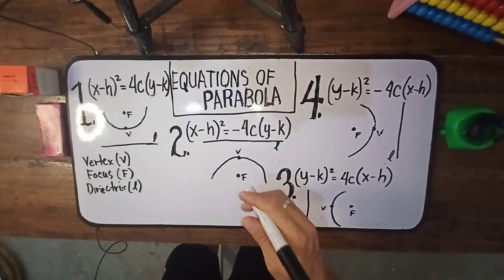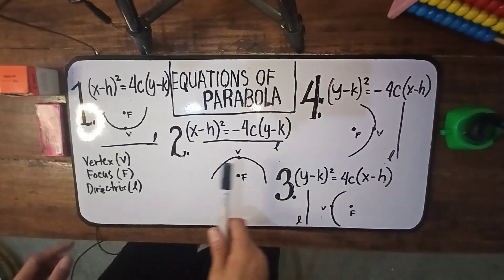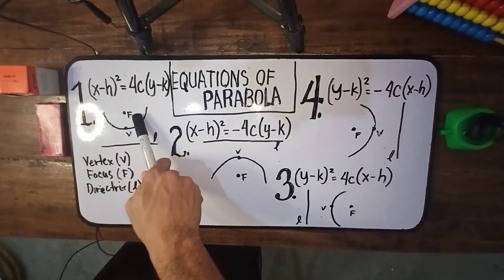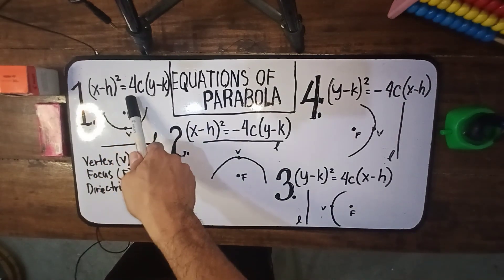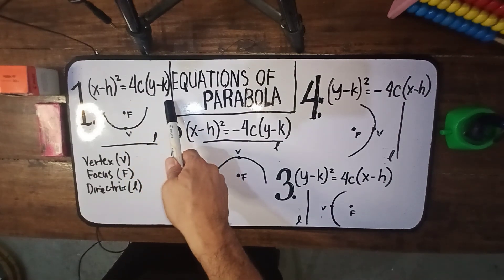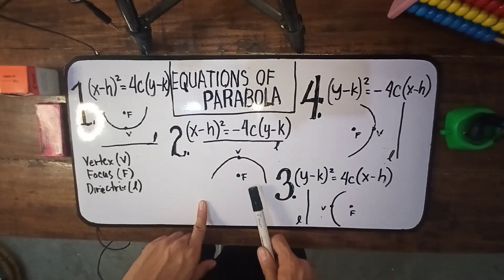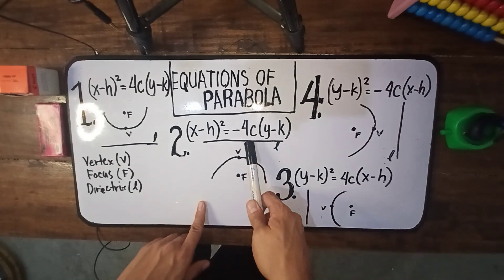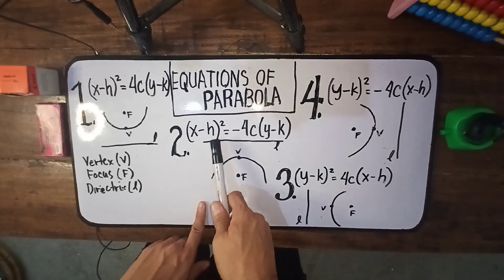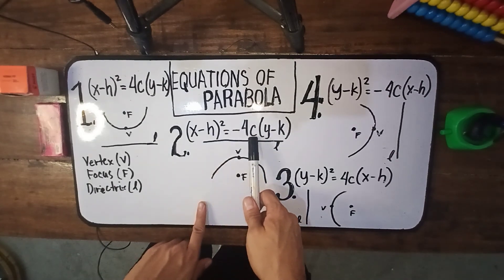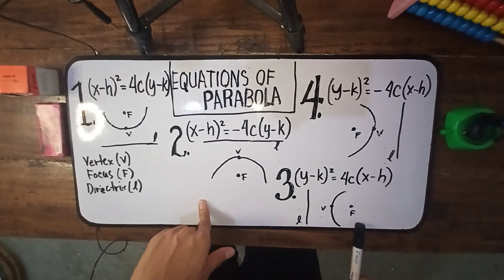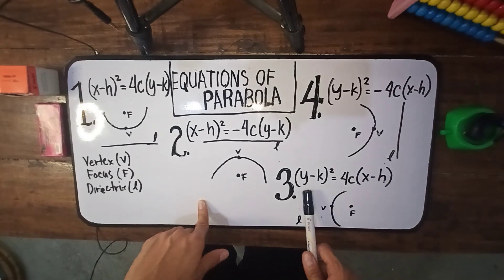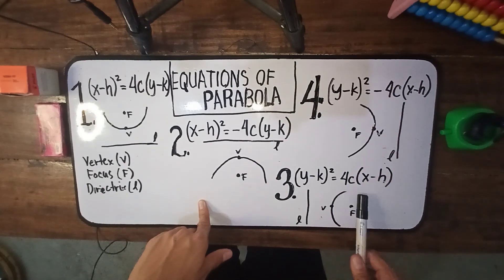Isa-isayin muna natin ang mga equations ng parabola depende sa kanyang opening. Number one, opens upward. Here's the focus, here's the vertex, and here's the directrix. The equation is (x minus h) quantity squared equals 4c times (y minus k). Number two, opens downward. Here's the vertex, here's the focus, and here's the directrix. The equation is (x minus h) quantity squared equals negative 4c times (y minus k). The third equation is opens to the right. Here's the vertex, here's the focus, and here's the directrix. The equation is (y minus k) quantity squared equals 4c times (x minus h).